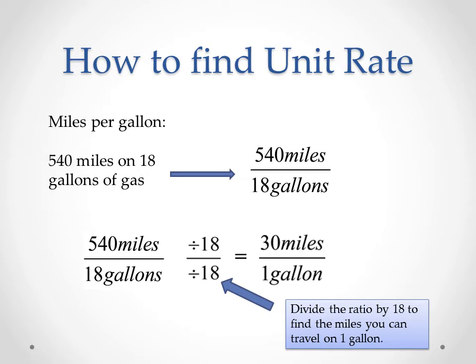Here's an example — figuring out miles per gallon. A car can drive 540 miles on 18 gallons of gas, so our ratio is 540 miles to 18 gallons. In order to find how far the car could go on one gallon, we divide the top and the bottom by 18, and we get 30 miles to one gallon. So if you ever hear your parents say 'I get 28 miles to the gallon,' that's how they figure it out.